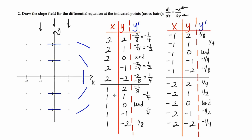1 half is steeper than 1 fourth, so you really want to show that change. For the next column we've got negative 1 eighth — not very steep at all. Then negative 1 fourth; keep in mind this was also negative 1 fourth in the x=2 column, so those should be parallel. Then undefined again, then positive 1 fourth — same as before, so they should match. And then 1 eighth, which isn't very steep at all.